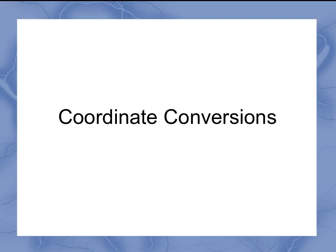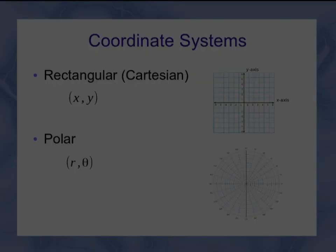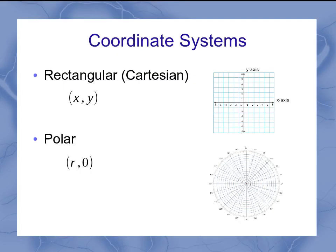Now we get to conversions between coordinate systems. As a reminder, when working with 2D positions, we can use either rectangular coordinates, sometimes called Cartesian, which is xy, or polar coordinates, which is r theta.